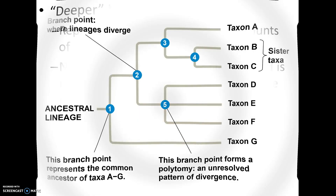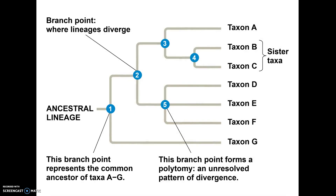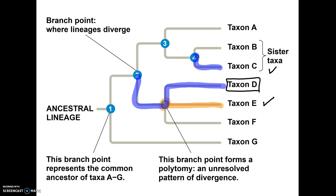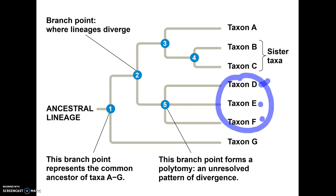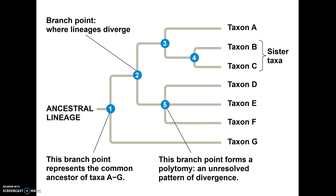Here's another example. You could be asked: what's more closely related to D — E or C? If you track back, E and D meet at node 5. But D tracking back to meet C requires going all the way back to node 2. So E and D are more closely related than D and C. On the other hand, if asked whether D is more closely related to E or F, the answer is they're the same — these three could be written in any order and it wouldn't change their relationship since they all track back to point 5.